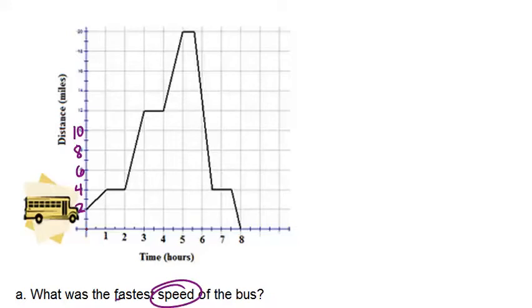So if we want the fastest speed, we want to think about which slope is the steepest. And it looks to me that the steepest slope was right here on this line.